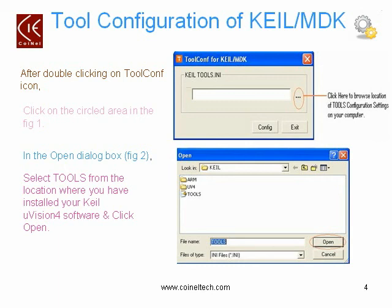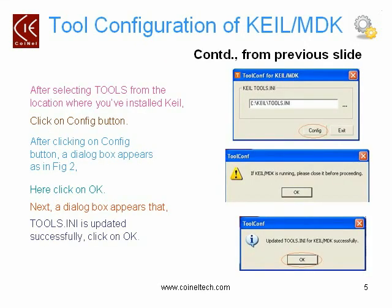Go into that location, select the tools icon, and then click on the Open button. When you click OK, the two configurations for Keil or MDK dialog box will show that your tools.ini has been selected. Then click on the Config button. When you click the Config button, a dialog box pops up indicating that if your Keil or MDK is running, you need to close it before proceeding.